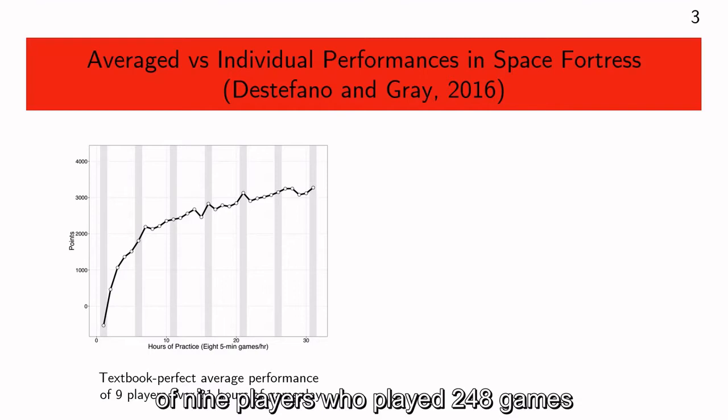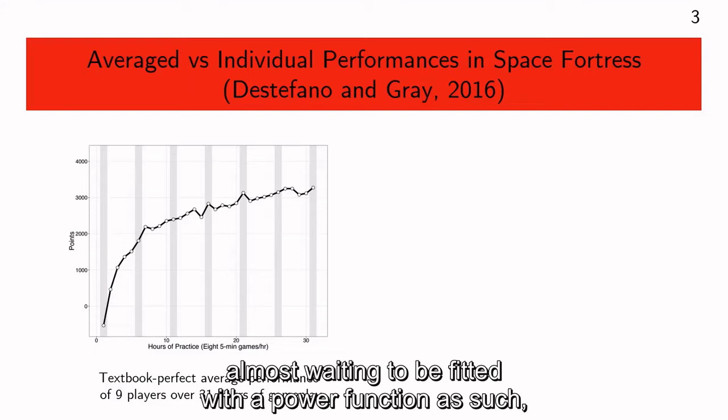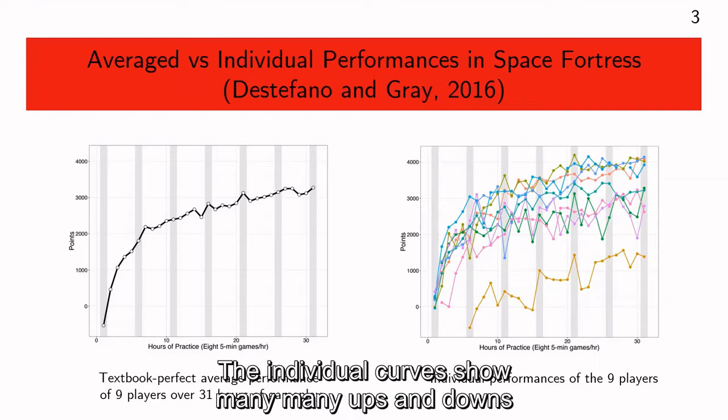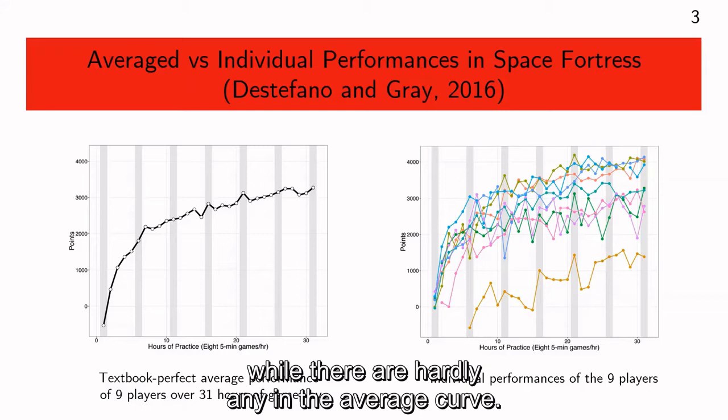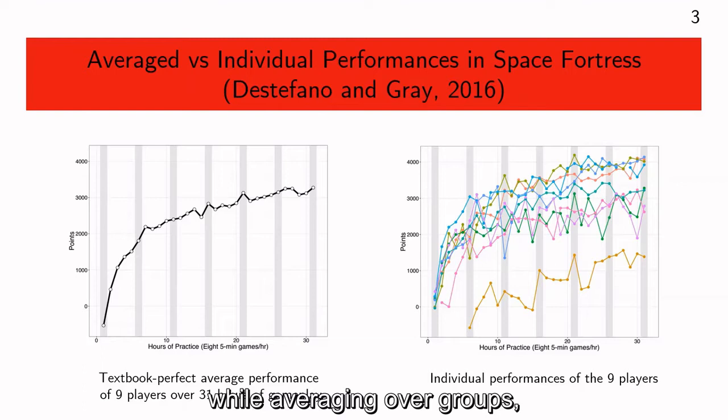We will look at the performance curves of nine players who played 248 games of Space Fortress over 31 hours in our lab. Here is the average performance of the group, which looks perfect — almost waiting to be fitted with a power function. But we refrain from doing so because the individual performance looks very different. The individual curves show many ups and downs, while there are hardly any in the average curve. So how well is the average representing the individuals? As it seems, not quite well.